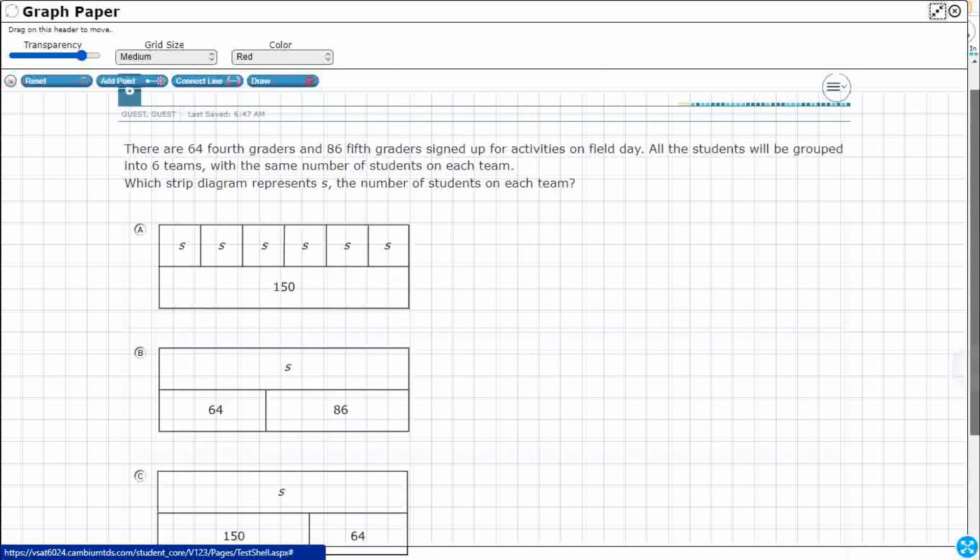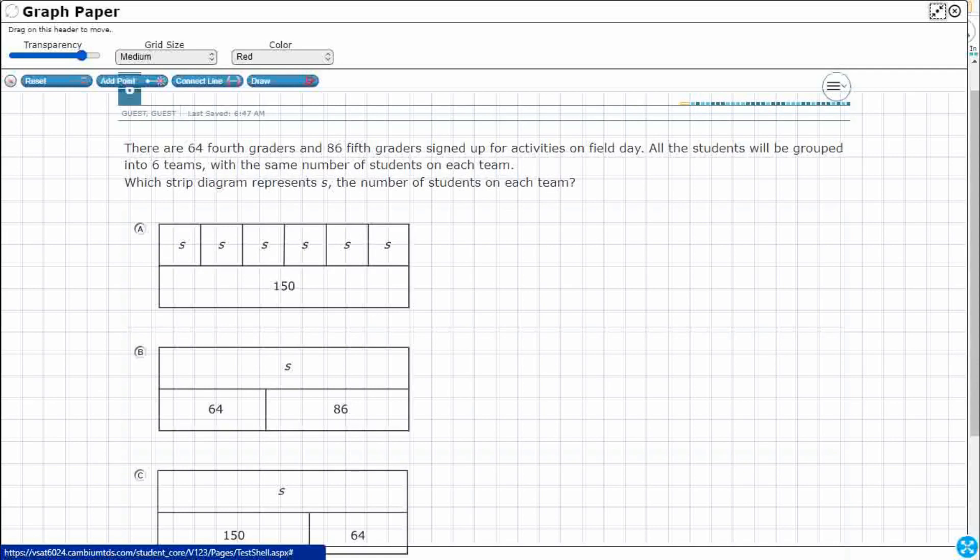There are 64 fourth graders and 86 fifth graders. All the students will be grouped into six teams. The same number of students on each team.